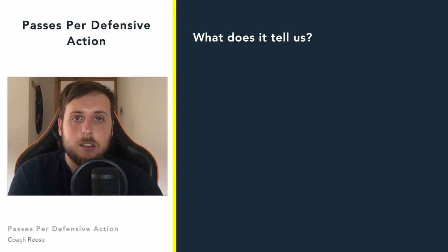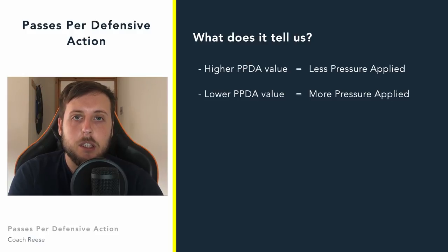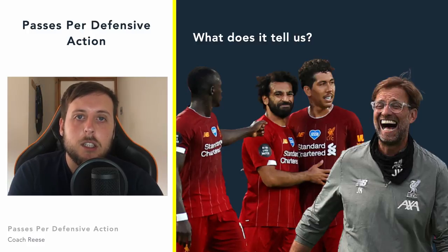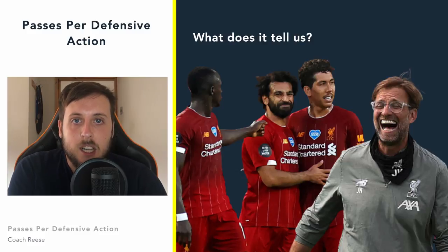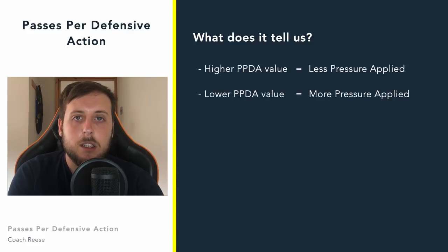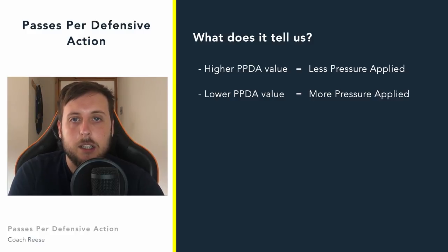So what does it tell us? A team with a higher passes per defensive action value will apply less pressure. For example, a team like Liverpool, who we know press quite a lot, will have a lower passes per defensive action score. This is because, because they press, teams are less likely to play passes within their own defensive third. Flip this — a team who don't press, who drop straight into a mid block, will have a higher passes per defensive action score because they allow the team to play out in that initial phase.